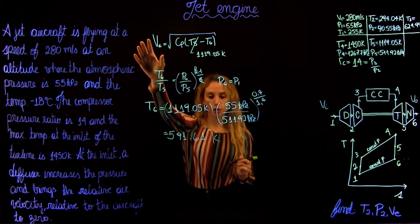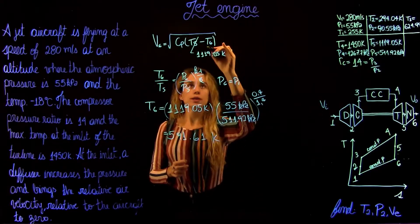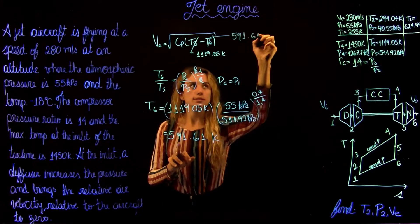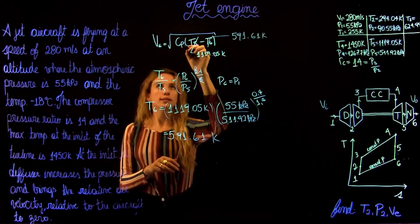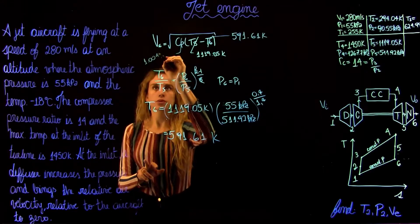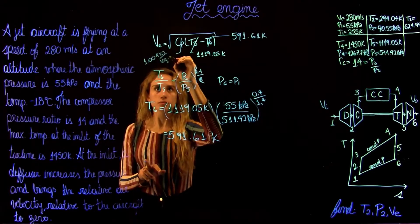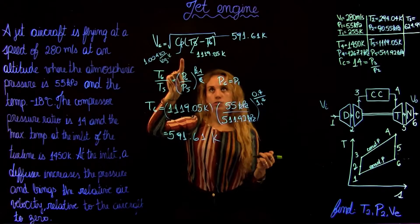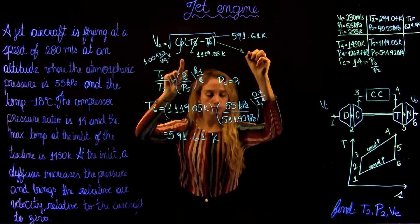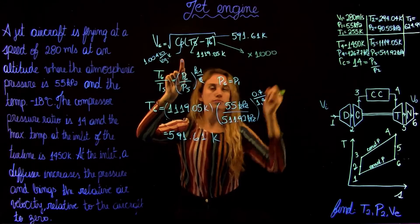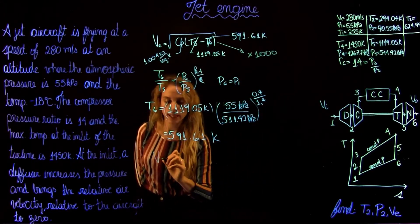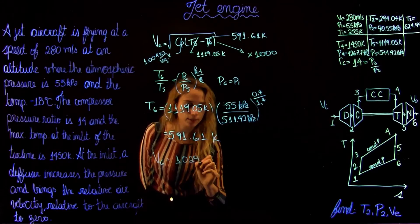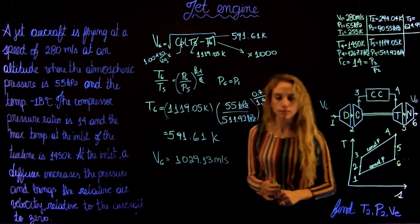Now we return to the exit velocity equation. With T6 = 591.61 K, T5 = 1119.05 K, and Cp = 1.004 kJ/kg·K, converting units appropriately, we find the exit velocity V6 = 1029.13 meters per second. Thank you.